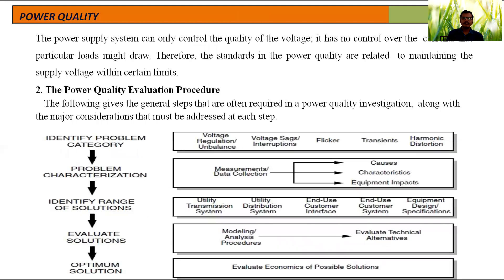Coming to how power quality is evaluated. The power supply system can only control the quality of the voltage — it has no control over the current. Current depends on the load; when the load changes, current changes automatically. So I cannot control the current, but I can control the voltage and fix limits for the voltage. That is done with the help of improving power quality. Therefore, standards in power quality are related to maintaining the supply voltage within certain limits, and we can say it is quality power.